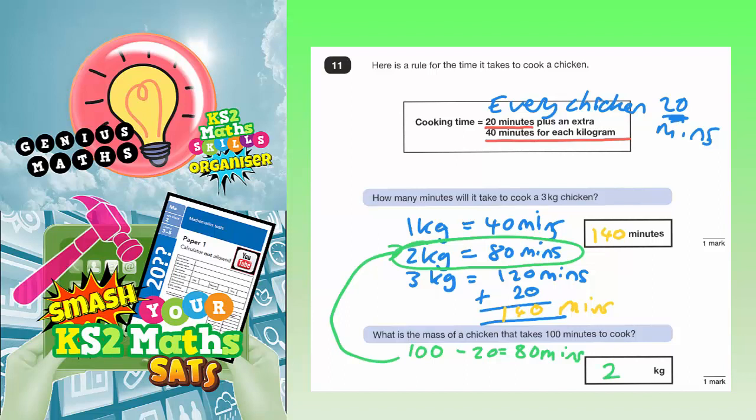So that is the answer. 2 kilograms. A 2 kilogram chicken is going to take 100 minutes to cook.